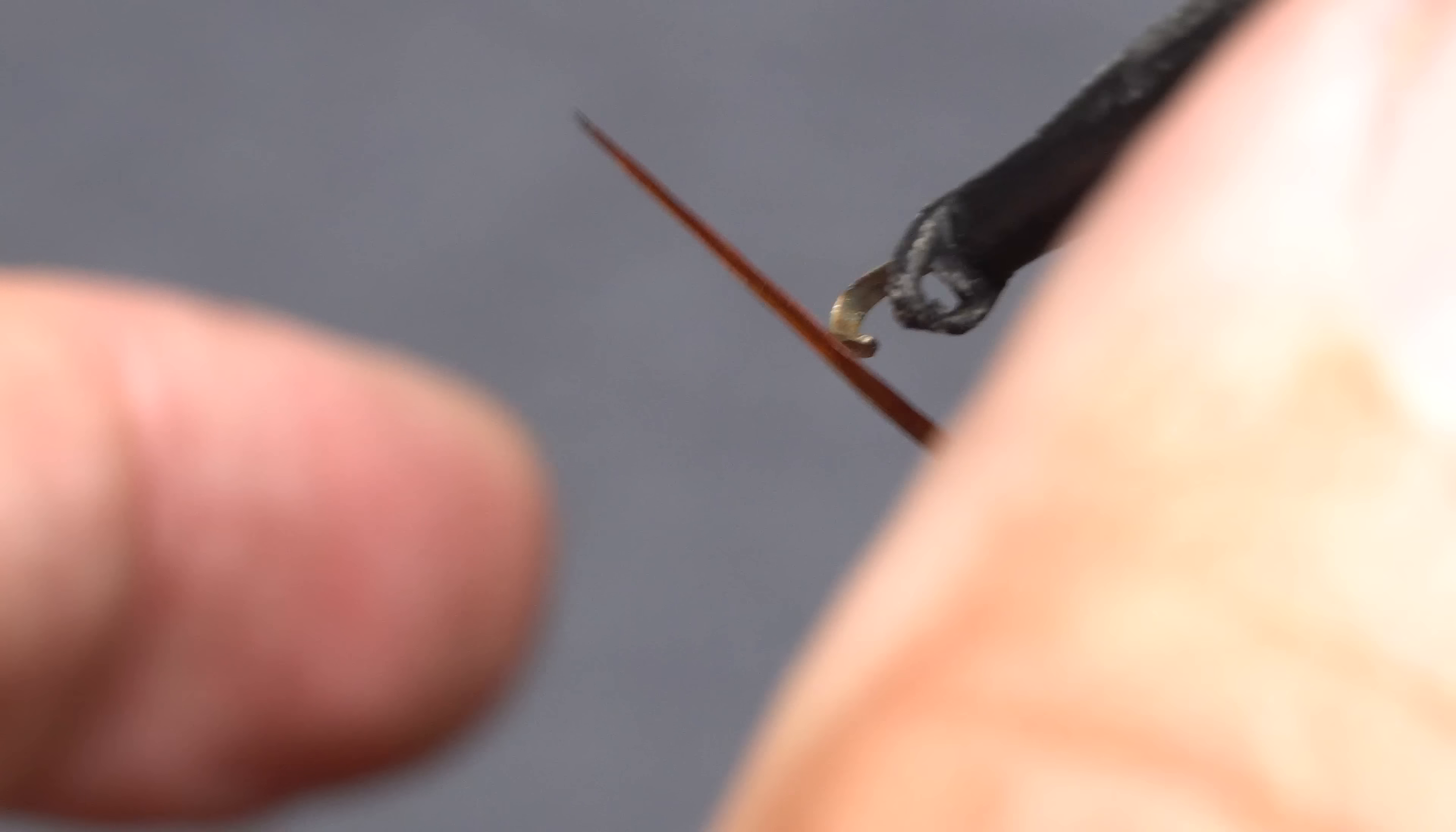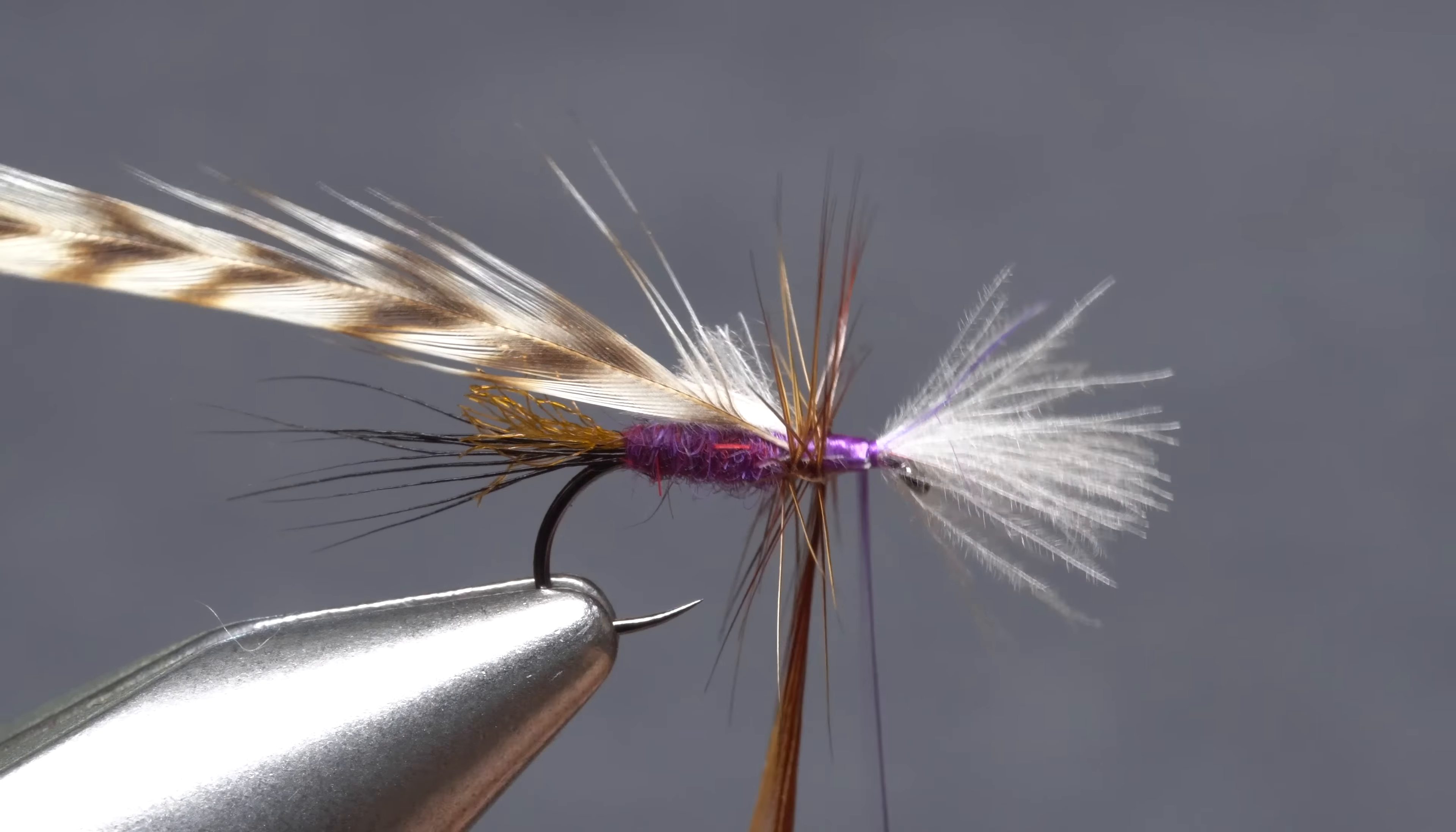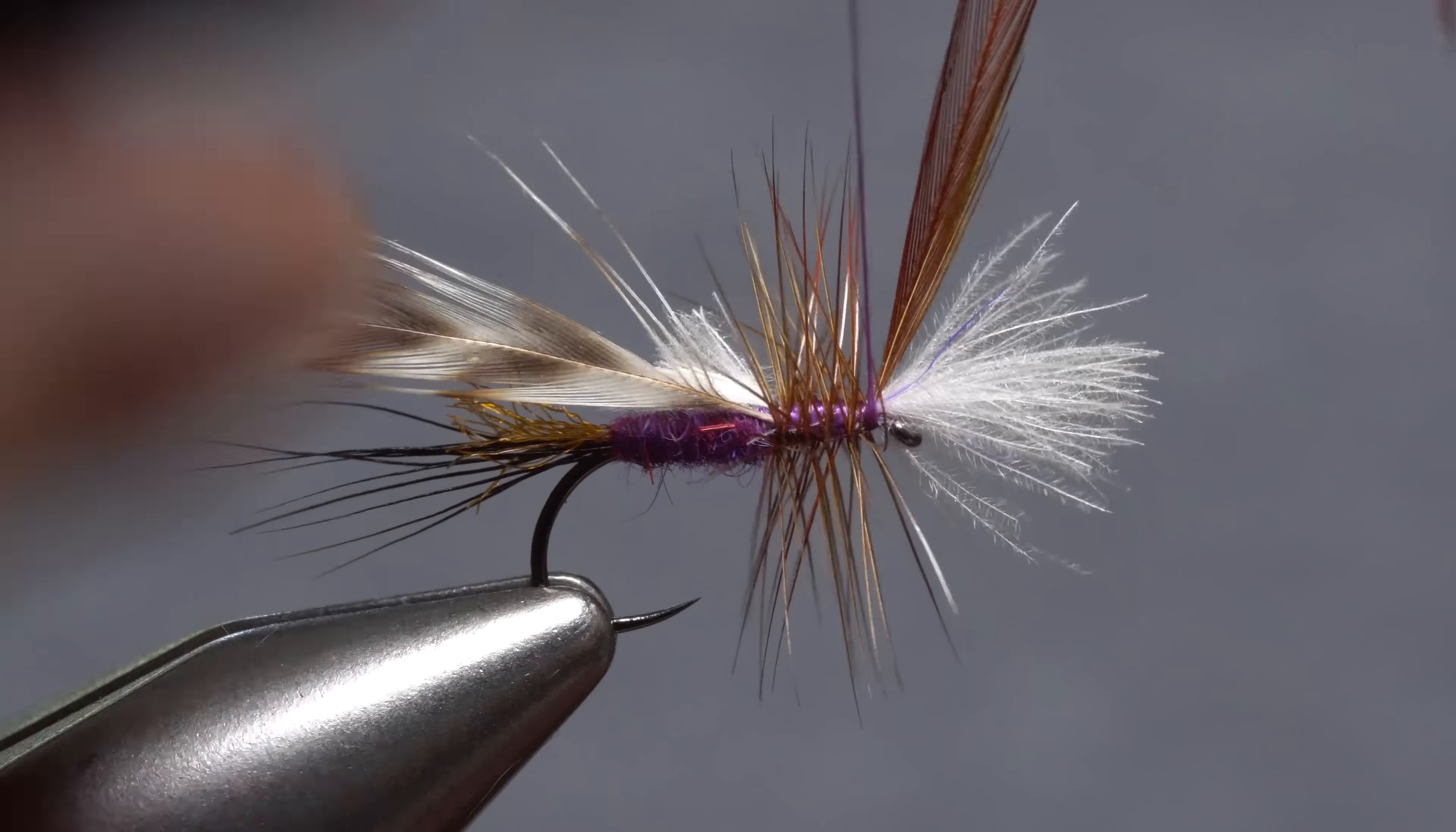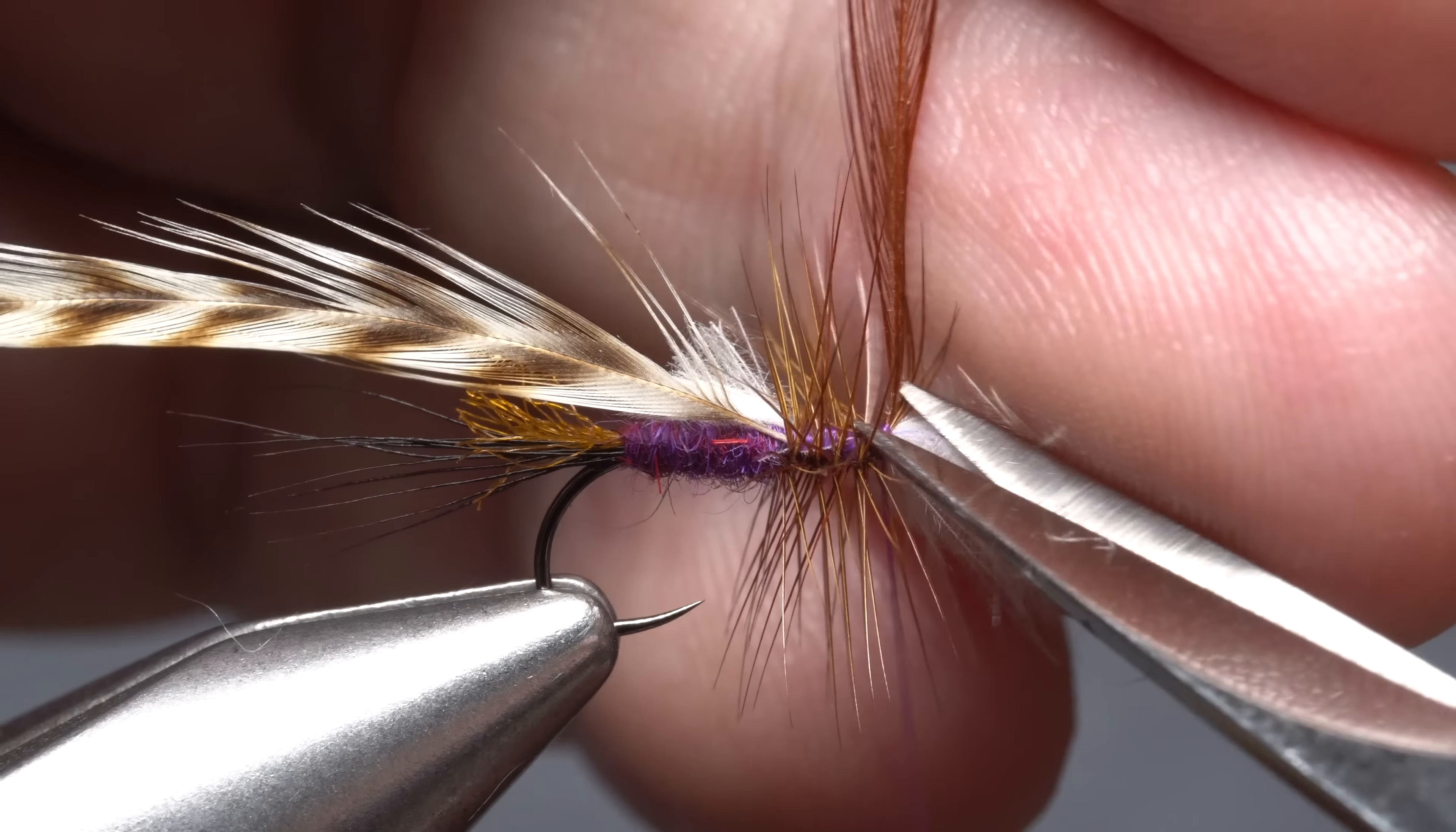Get hold of the tip of one of the feathers with hackle pliers and start taking wraps with it. Leave just a small amount of space between wraps. When you reach your tying thread, use it to firmly anchor the feather's tip. Use your tying scissors to carefully snip the excess off close.